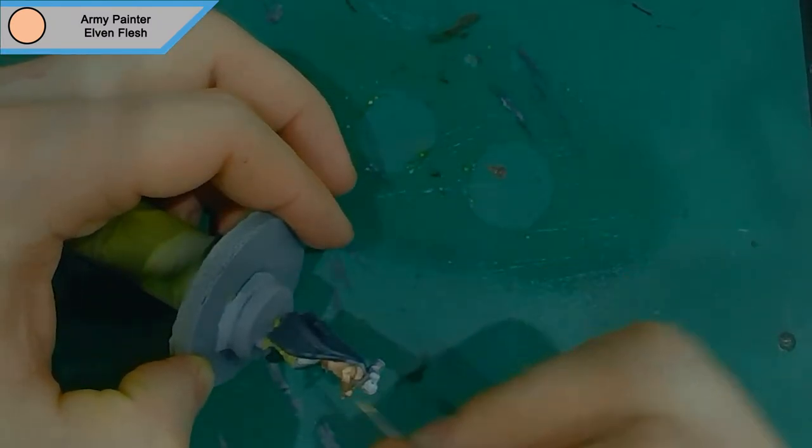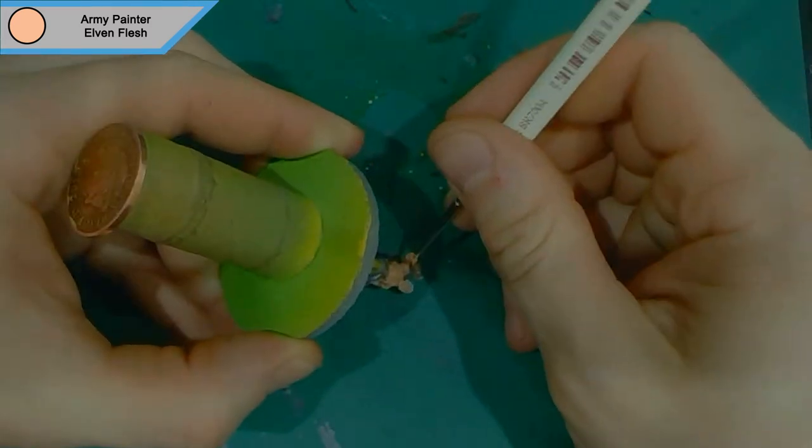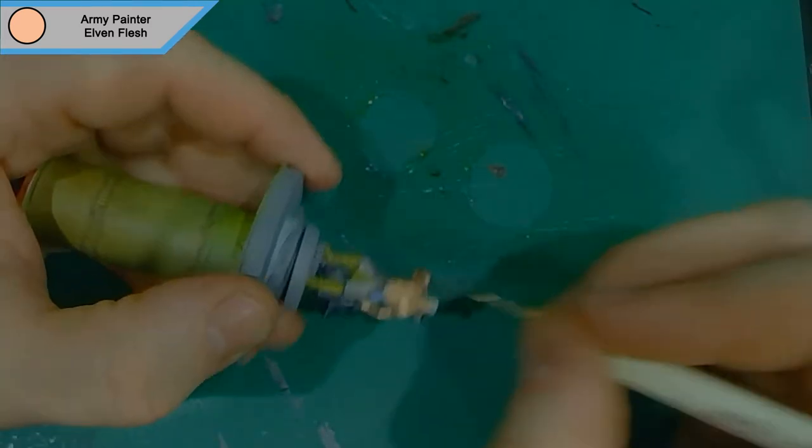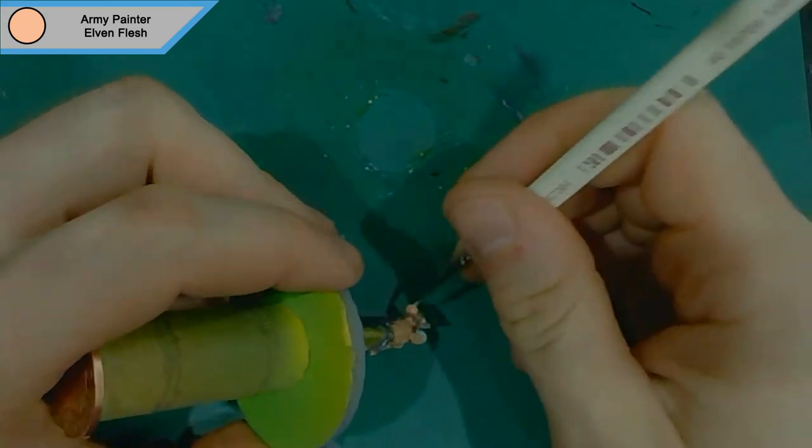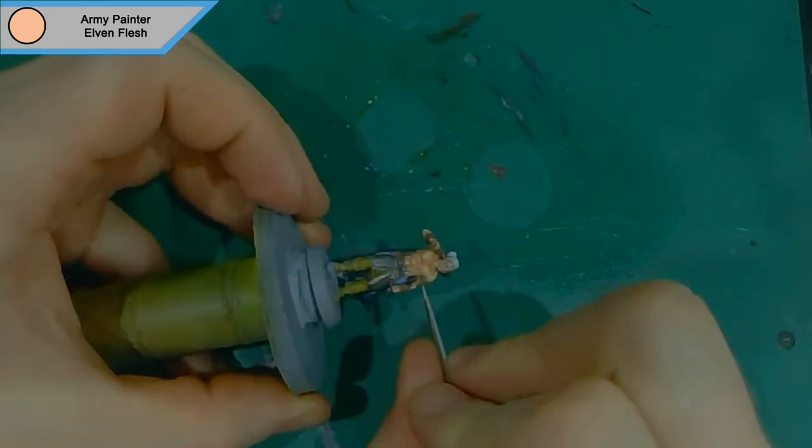I always found that if I do a wash and then highlight afterwards, there's a big contrast between them, whereas if I do it like this, it all blends into each single thing. The contrast is still there, but it's not as big.